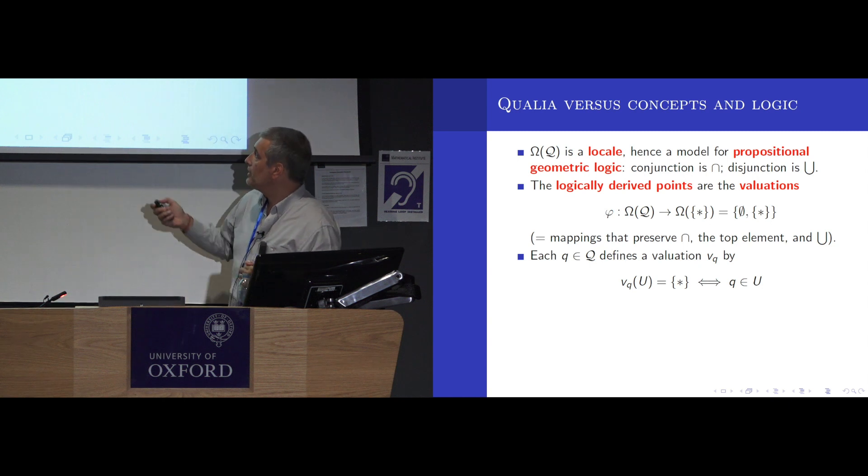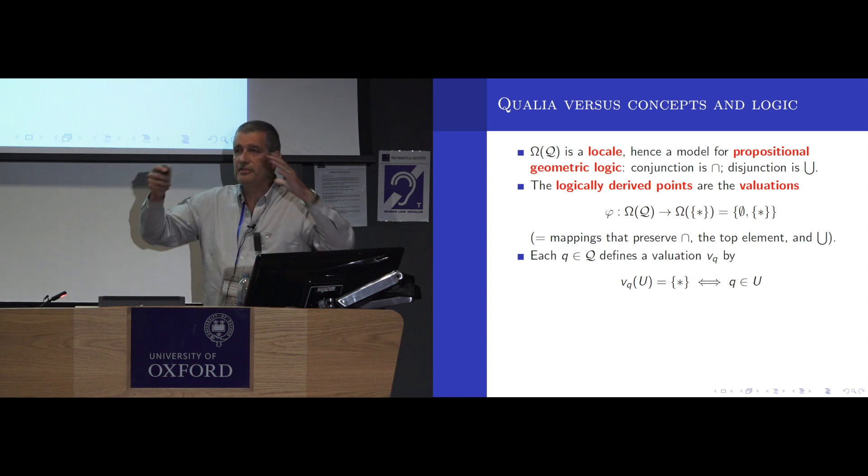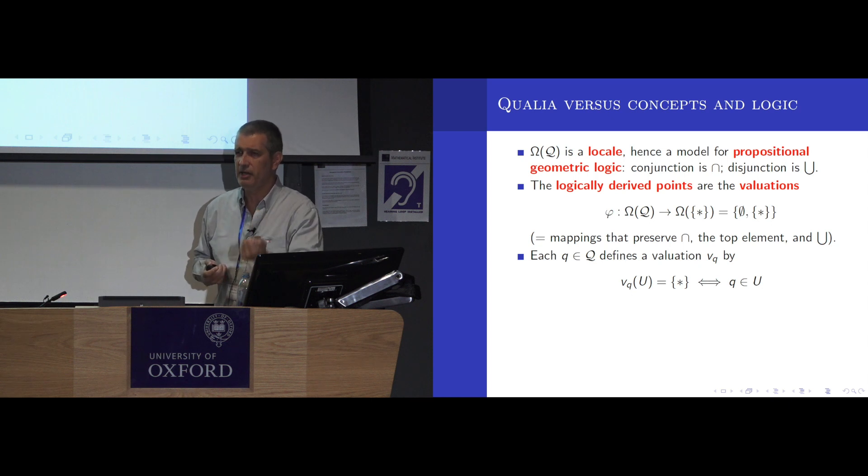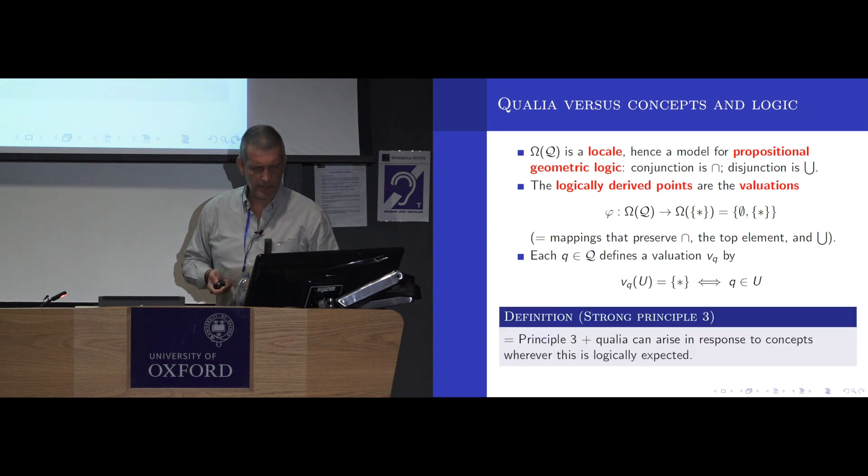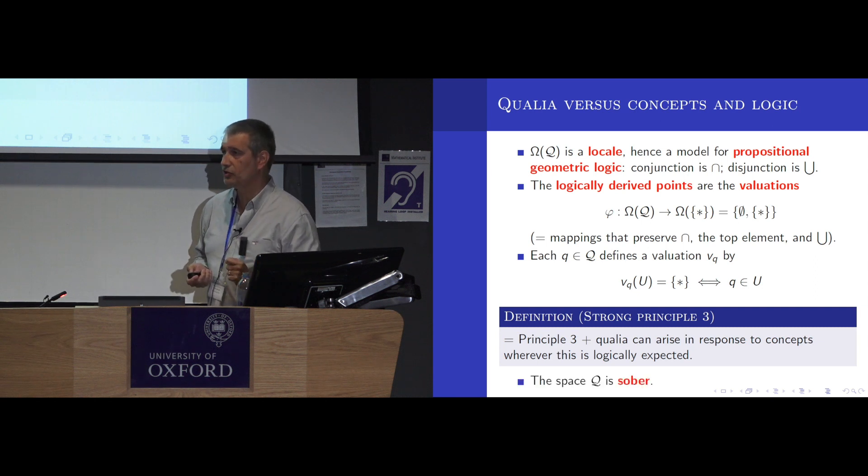Fine. OK. Now, let's suppose that the logic allows you to discover that some valuation exists which does not arise like this. Then that means that your system of concepts enables you to infer the existence of an experience which does not exist. This is slightly irrational. So I want to exclude this. I want my system of concepts to be reliable. So the next principle is a strengthening of the previous one, saying that qualia can arise in response to concepts whenever this is logically expected. So, in practice, I want there to be a bijection between qualia and valuations. And the spaces satisfying this condition are called the sober spaces.